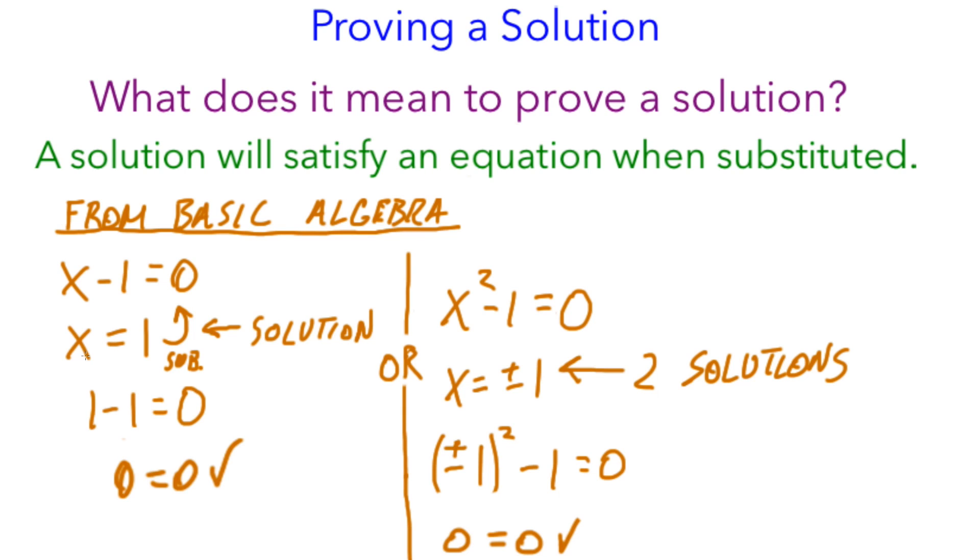To prove it's a solution, we substitute. We have 1 minus 1 is equal to 0, 0 is equal to 0. That solution checks.